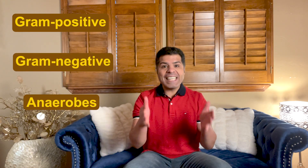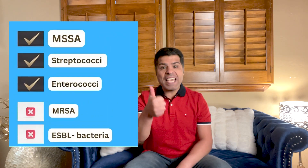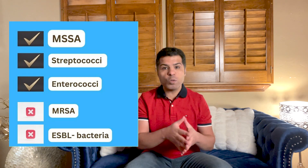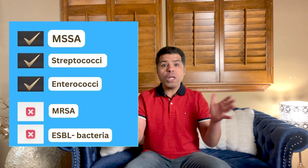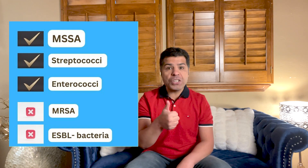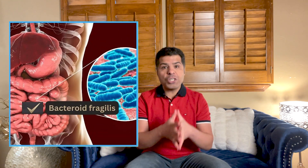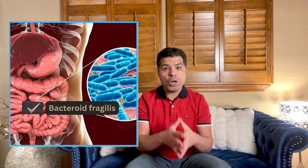Let's start with what they share in common. All three — Unasyn, Augmentin, and Zosyn — are active against gram-positive, gram-negative, and anaerobes. They have excellent activity against MSSA and streptococci, including group D streptococci (enterococci), but they do not cover MRSA. All are not reliable against ESBL-producing bacteria — use a carbapenem instead. All are active against Bacteroides fragilis, making them appropriate for intra-abdominal infections.